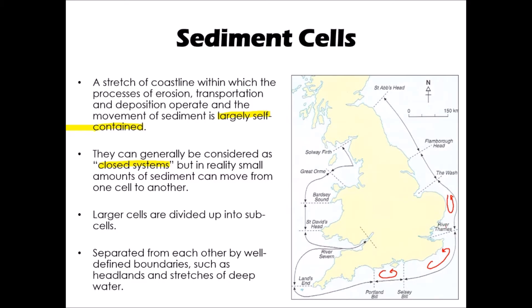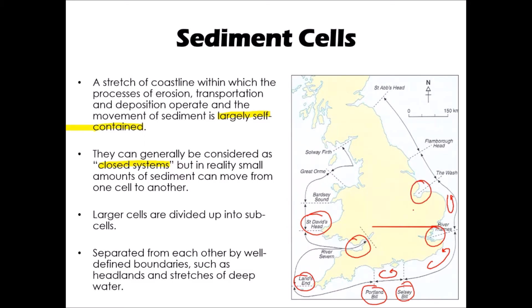It's a little bit like the concept of a drainage basin, which we've looked at when we've learnt about rivers, where we can divide the country up into a series of drainage basins. We can do the same with our coastline and divide it up into a series of sediment cells. They're often separated from each other by quite well-defined boundaries — either prominent headlands like Portland Bill, Selsey Bill, Land's End or St David's Head, which act as barriers that sediment can't move past. Alternatively, they might be separated by areas of quite deep water, like the Severn Estuary, the Thames Estuary, or the area of the Wash, which also act as a barrier to sediment movement between one cell and another.